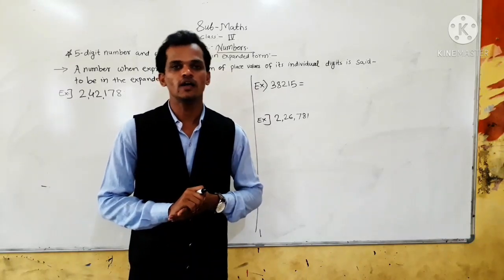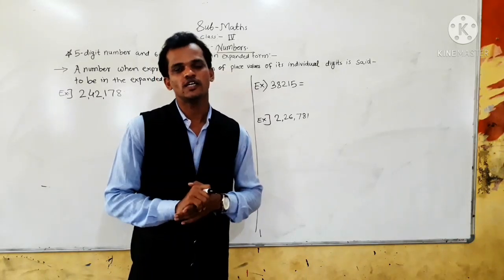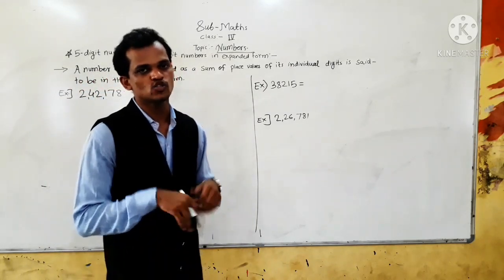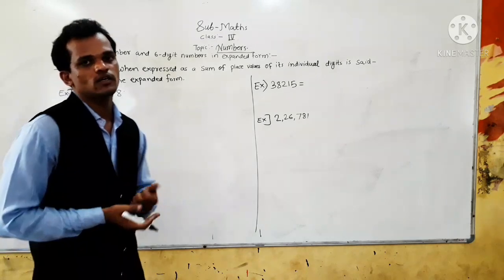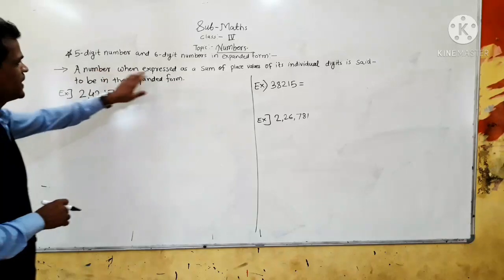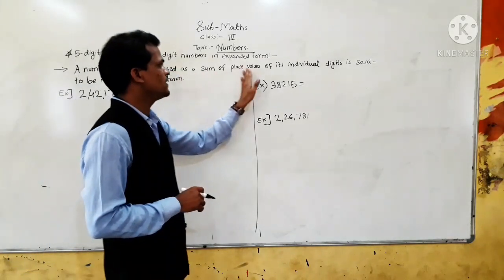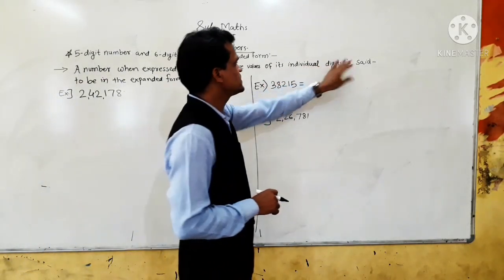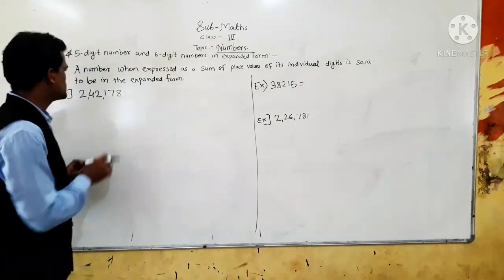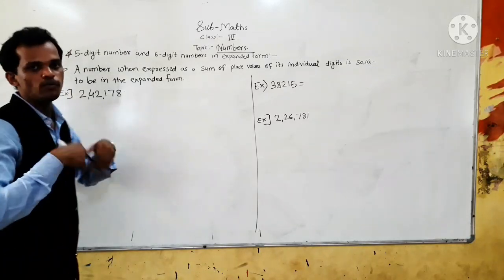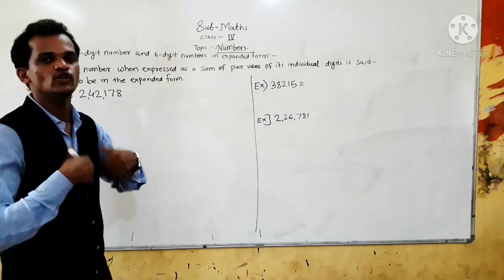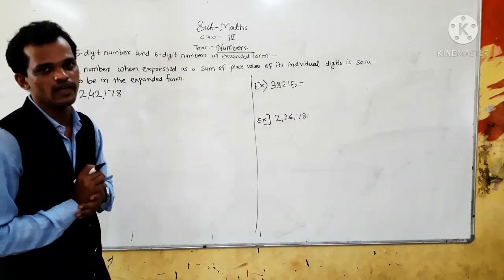Hello dear students, today we will learn the 5-digit number and 6-digit number in the expanded form. Once we understand what it means by expanded form — a number when expressed as the sum of the place values of its individual digits is said to be in the expanded form. You should know the place value of each digit, then you can write that number in the expanded form.